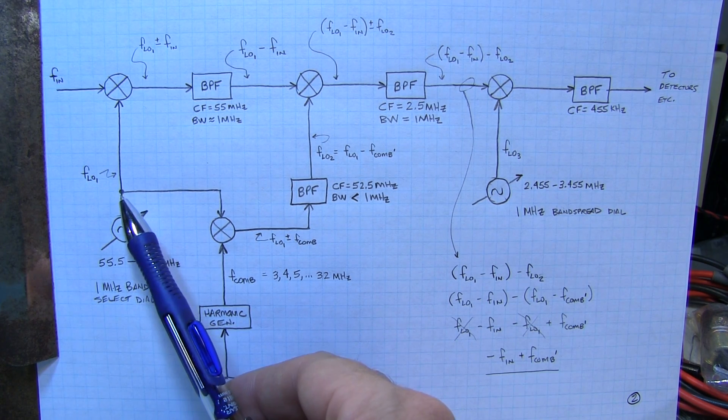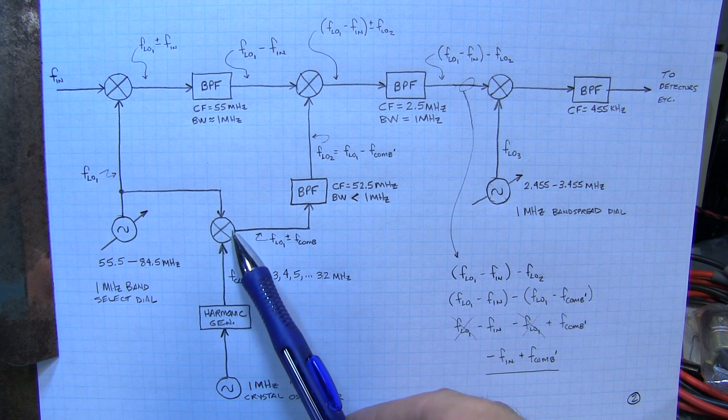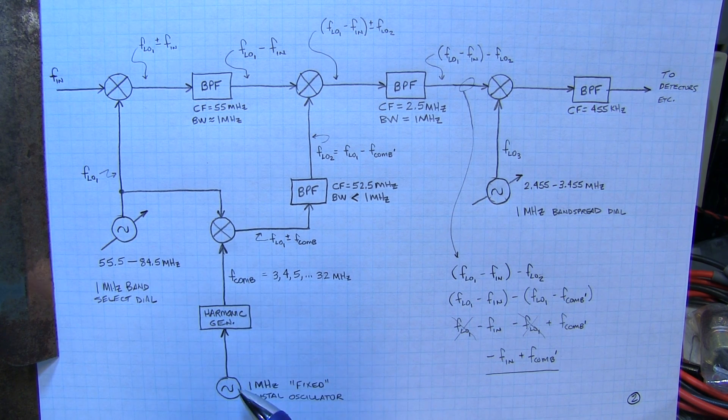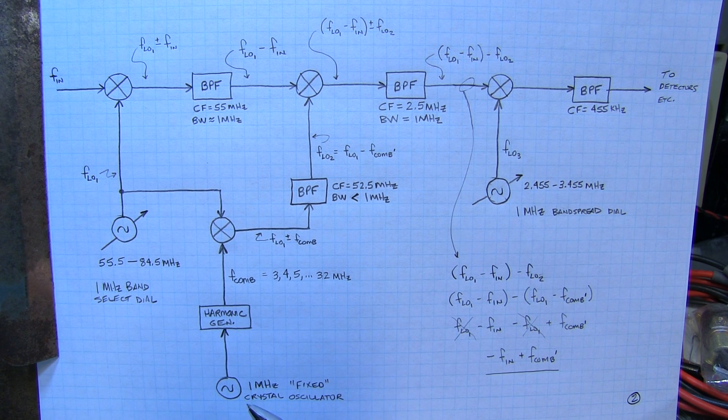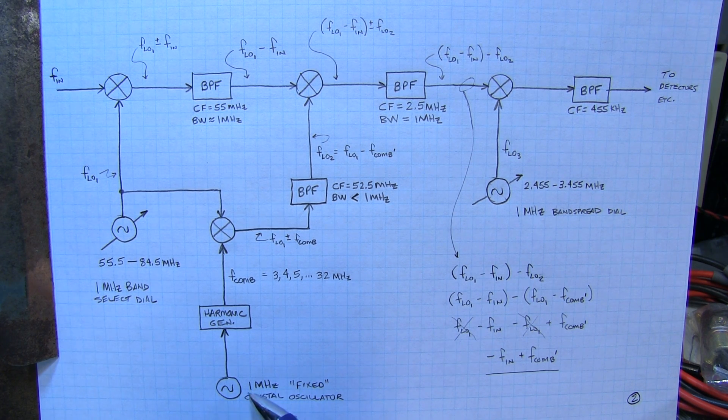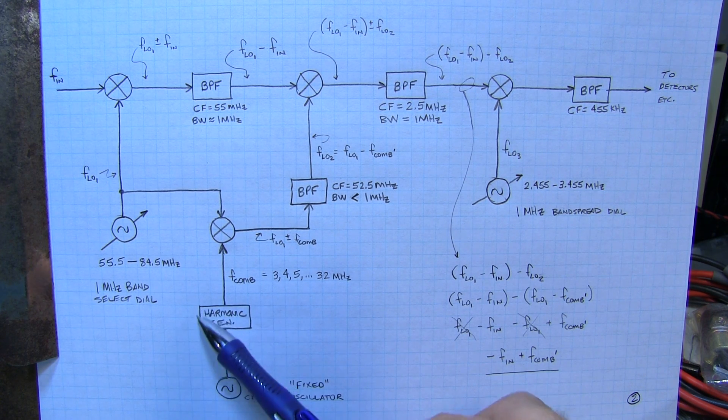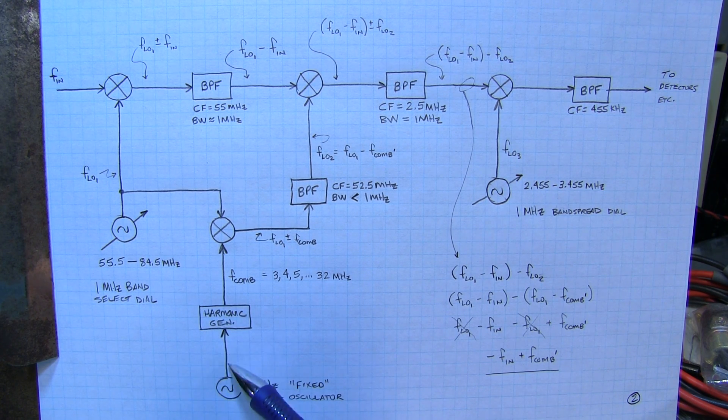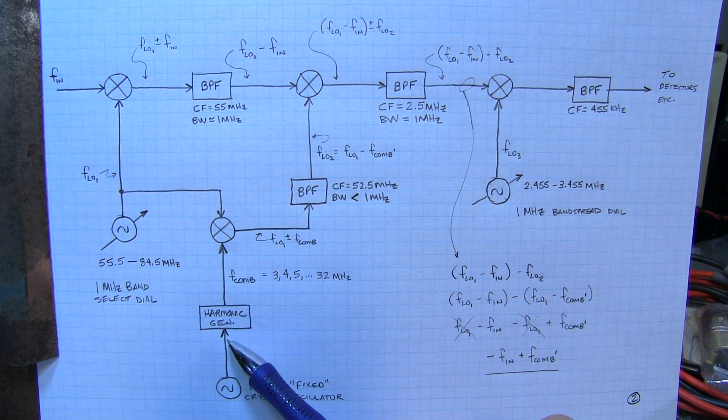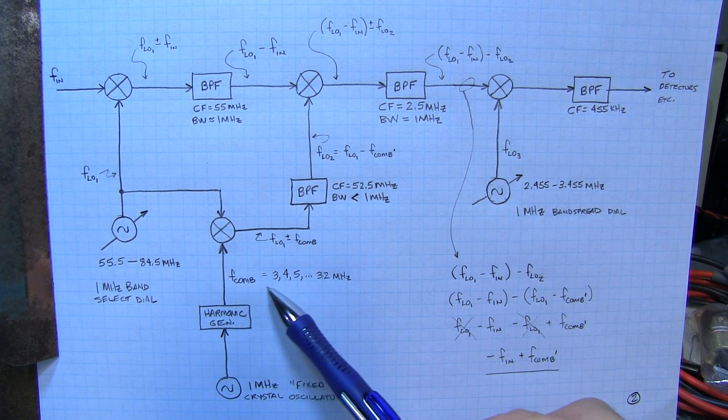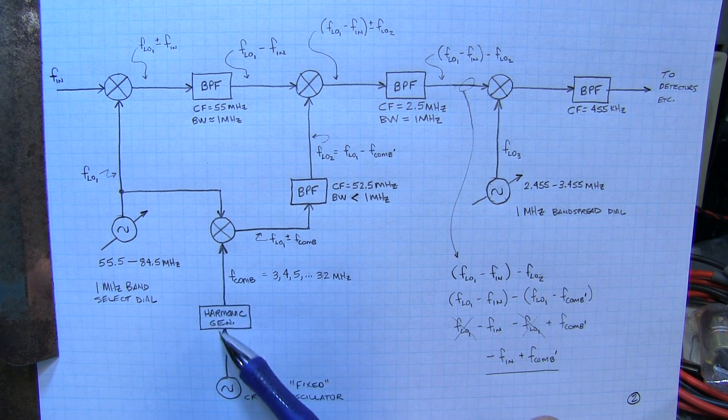That same local oscillator signal is also mixed in another mixer with a crystal controlled oscillator. Crystal controlled oscillators are typically very stable. In this case it's a 1 MHz crystal oscillator. But it goes through a harmonic generator.